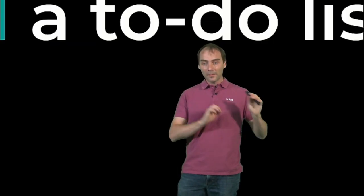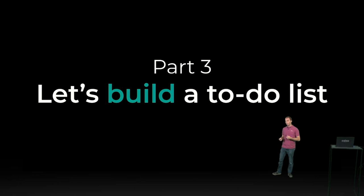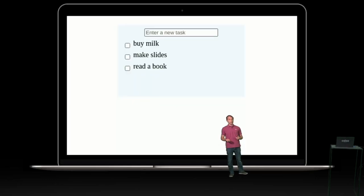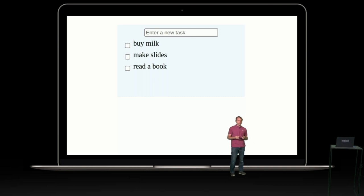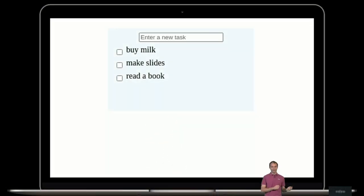Now, enough theory. Let's start working with OWL and build a real application — a task list application. We will explain a lot of concepts along the way. The application will be a simple component that lets the user enter new tasks in an input. Those tasks are just a list of text, and they can be toggled to mark them as completed and deleted as well. It's a very simple project, but nice enough to play with a lot of OWL concepts. Obviously the result will be completely over-engineered, but it will be an excuse to introduce interesting concepts.